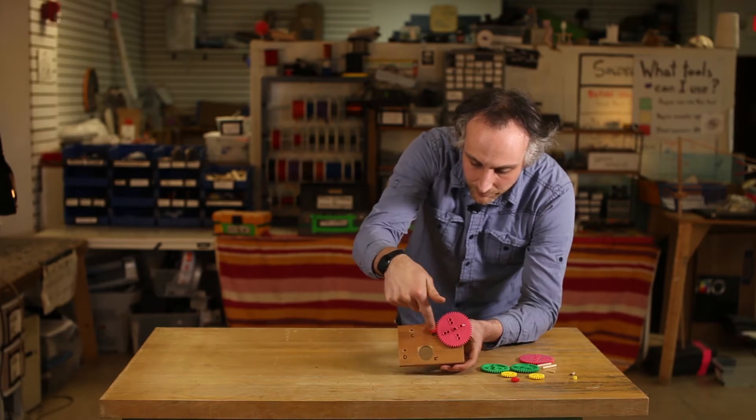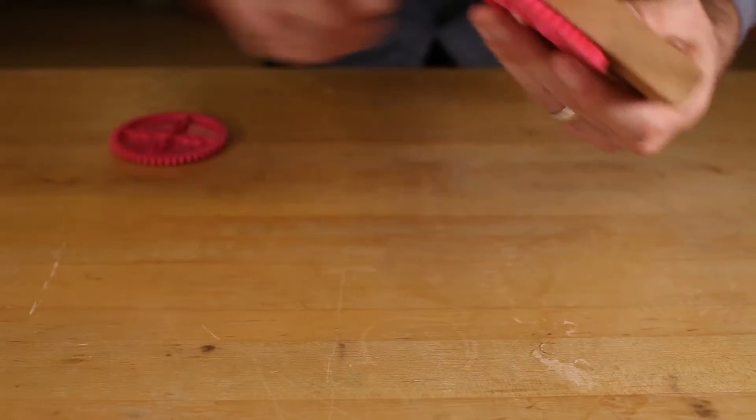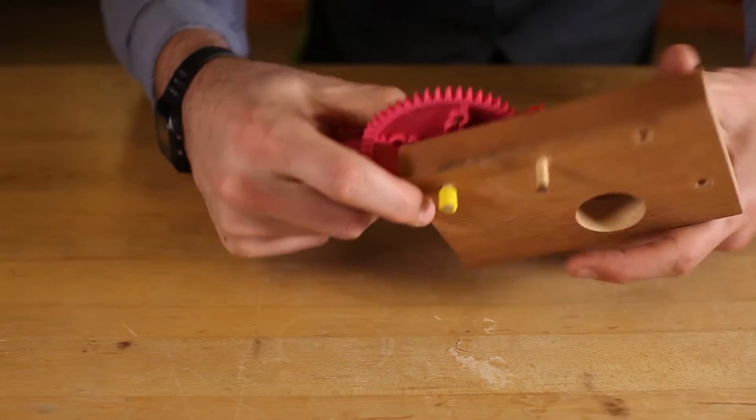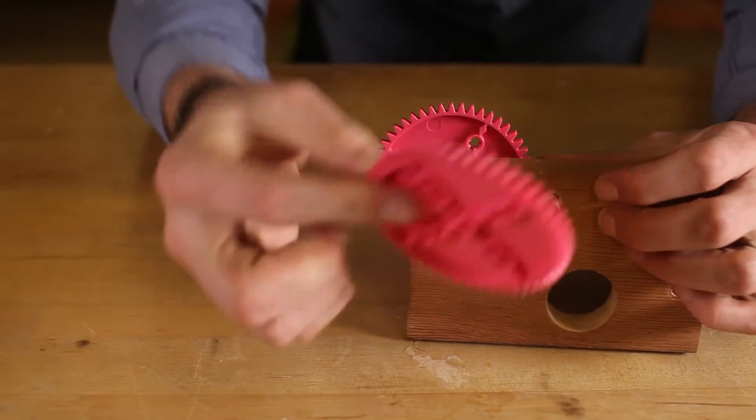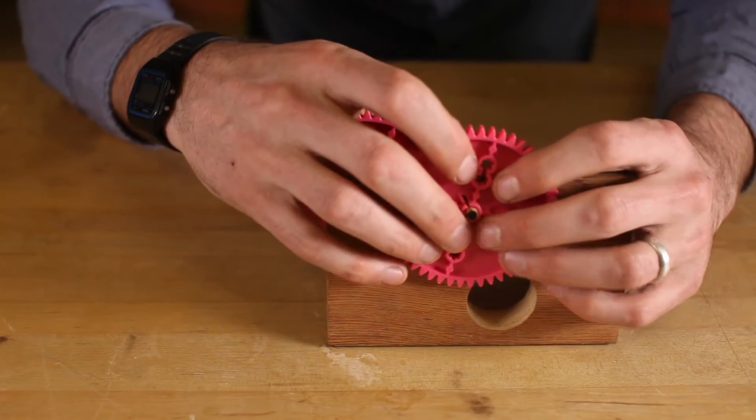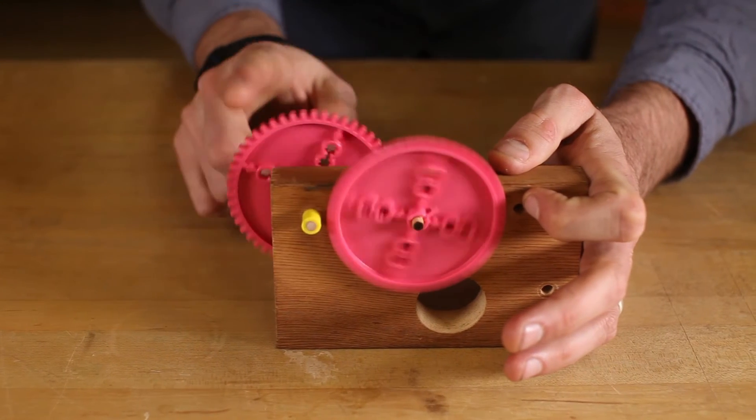So now we have this gear turning this red one. And then on the other side, we're going to take another one of these big gears and stick it on. Now when this pink gear spins, this gear spins five times faster.